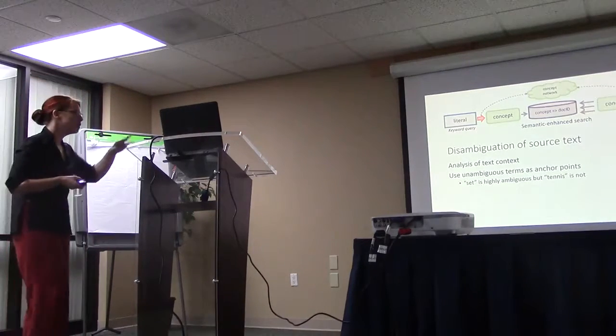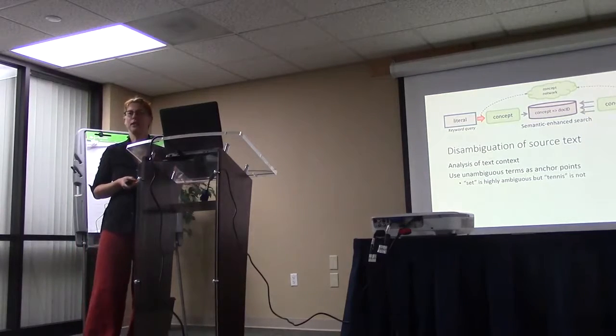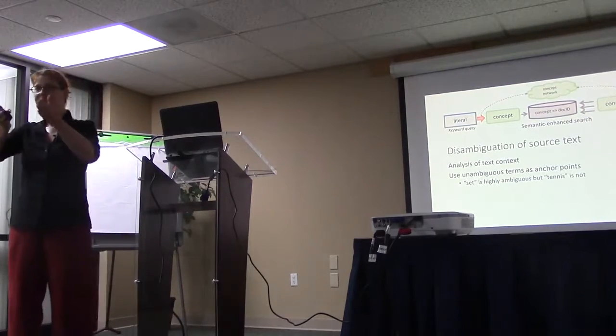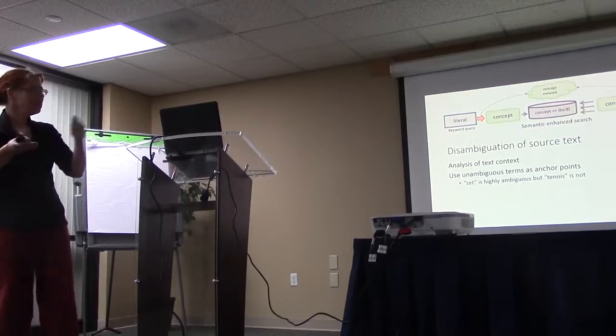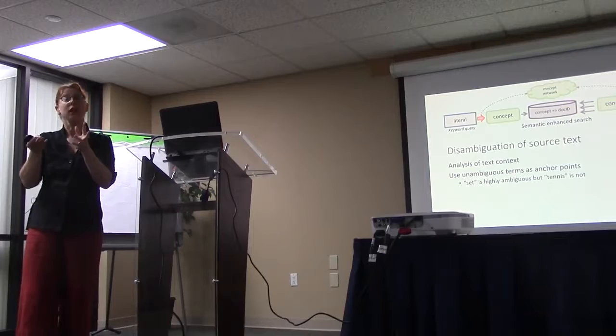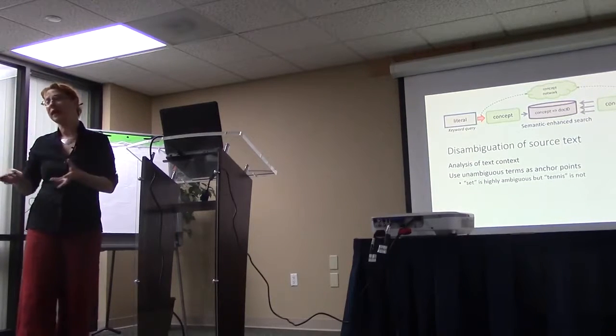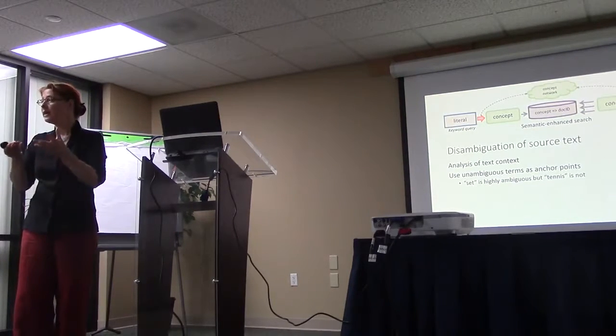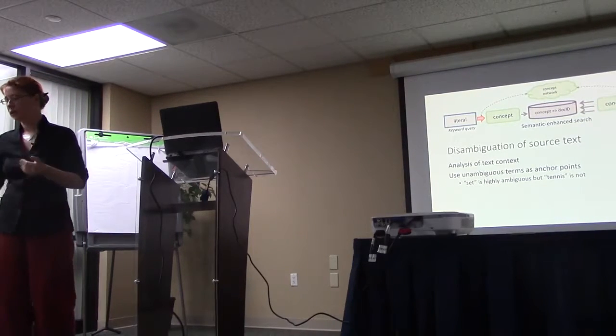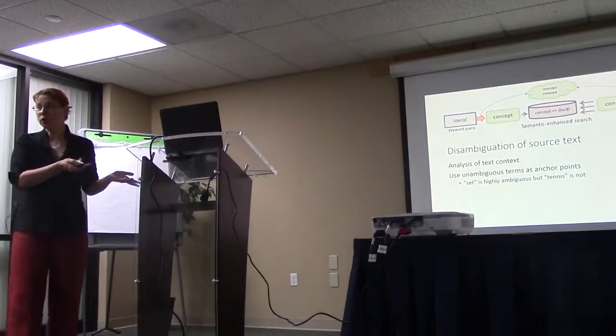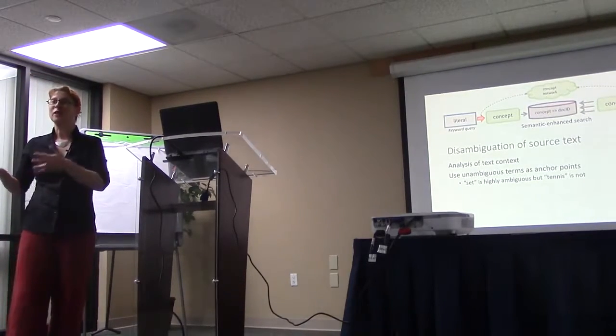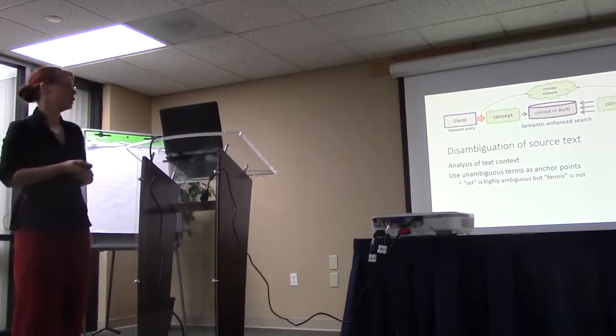So, for example, if you look at the two terms set and tennis, set is highly ambiguous. Set can be all sorts of things, whereas tennis is actually pretty narrow. And if you have set and tennis together in close proximity, you can be pretty sure we're actually talking in this text about a tennis match instead of perhaps set theory from mathematics. You wouldn't go just by two words. Yes, it could still be an example in the mathematical book. So you would want to look at more words than just two of them.